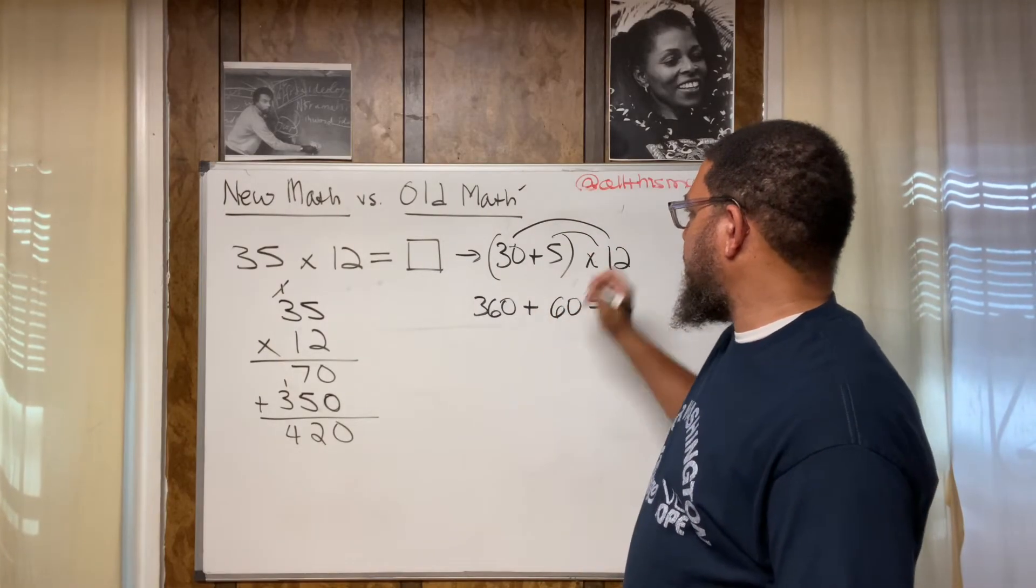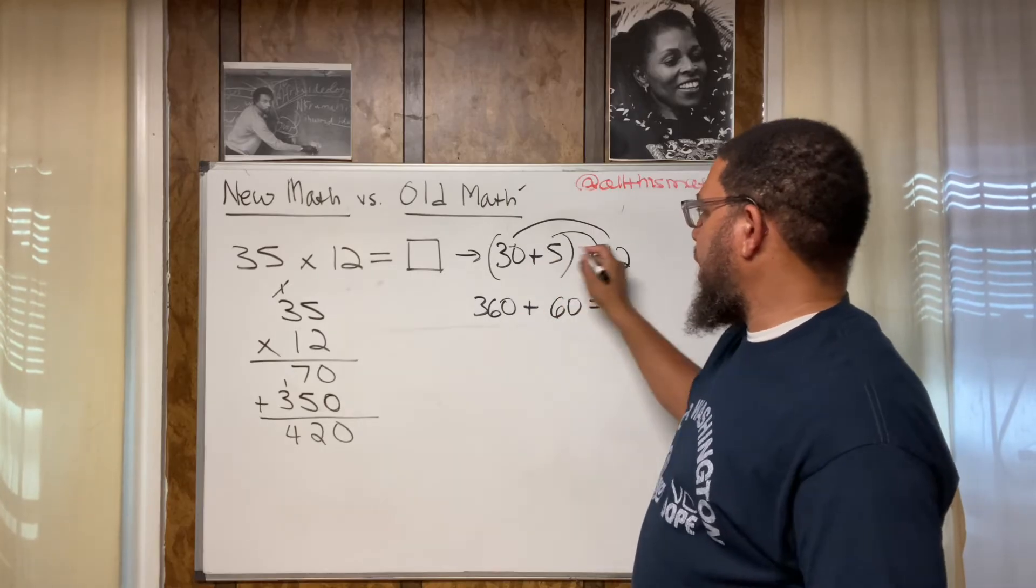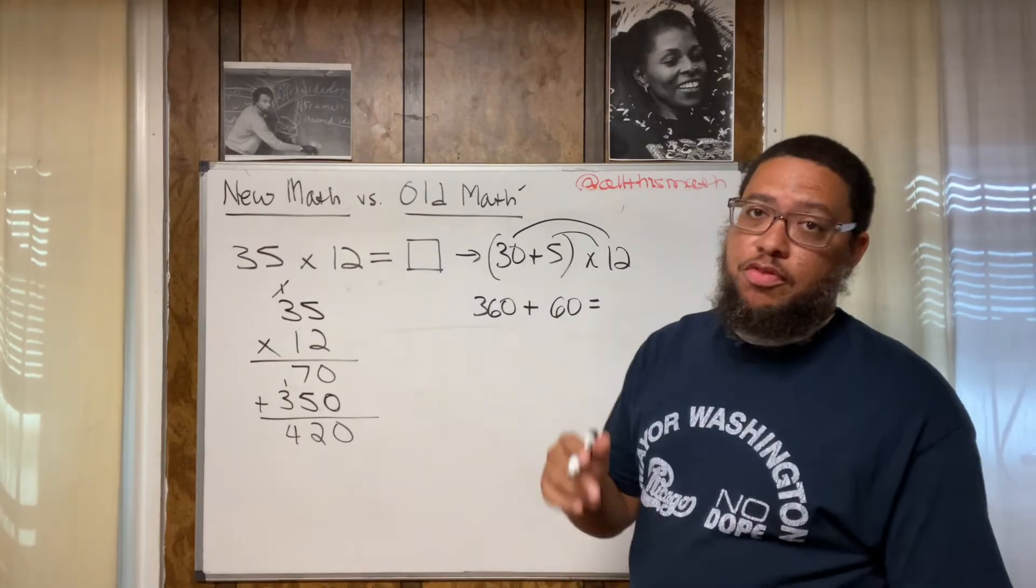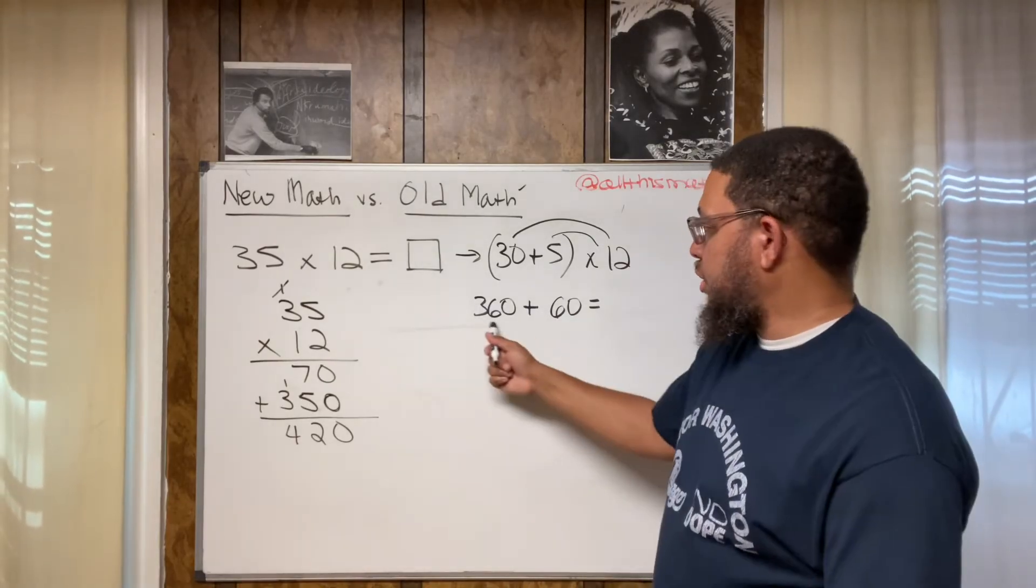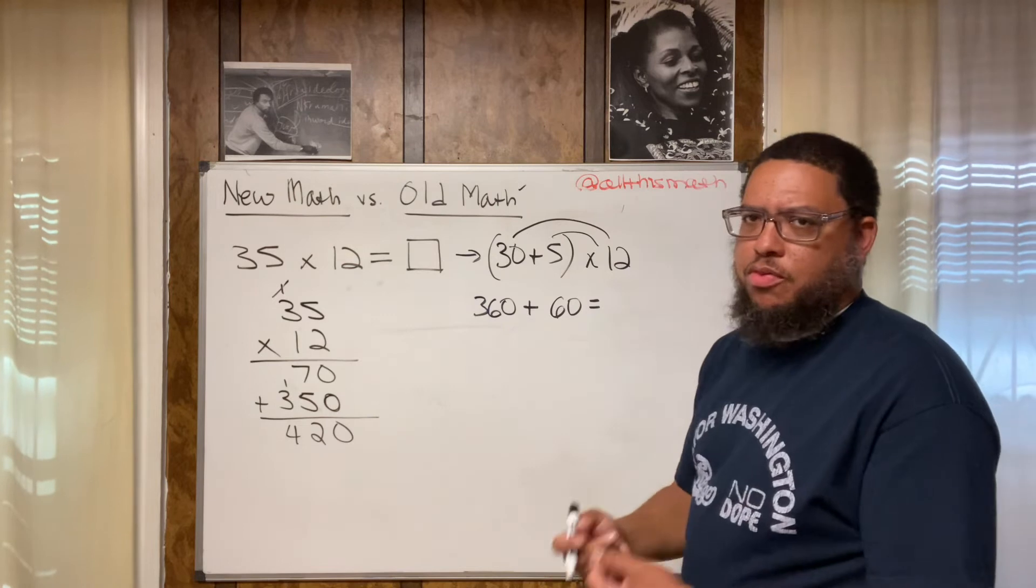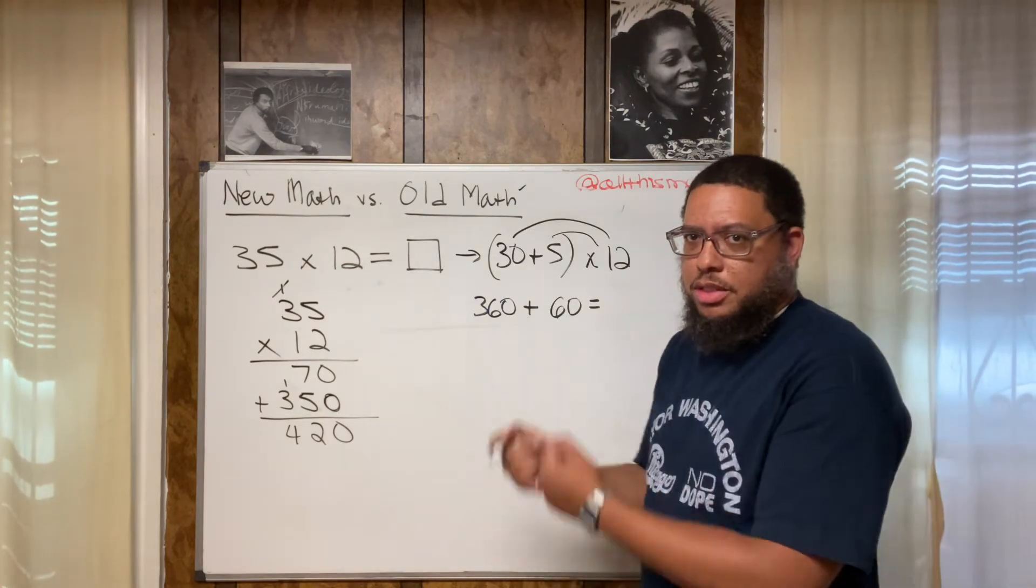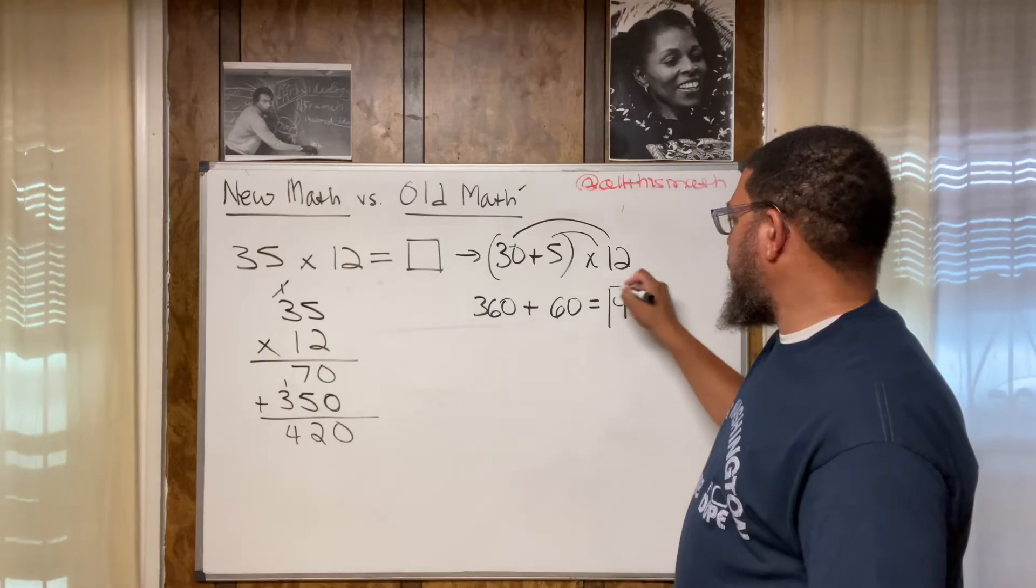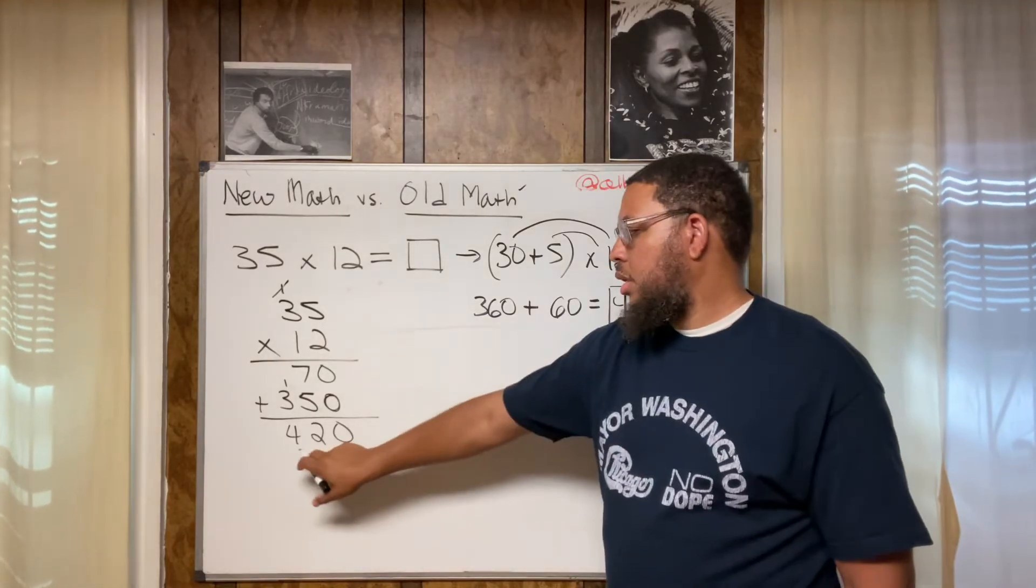And then we just add these two products together. 30 times 12 is 360. Five times 12 is 60. Add them together. Now, if I know that 36 plus six is 42, then 360 plus 60, think about it, if we're counting money, $360 plus another $60, that's $420. So we still get 420, just like we did down here. Except this is a mental math method.